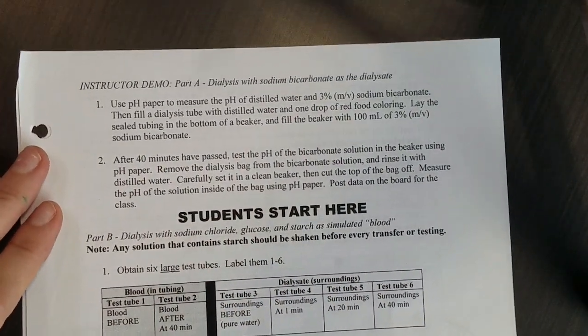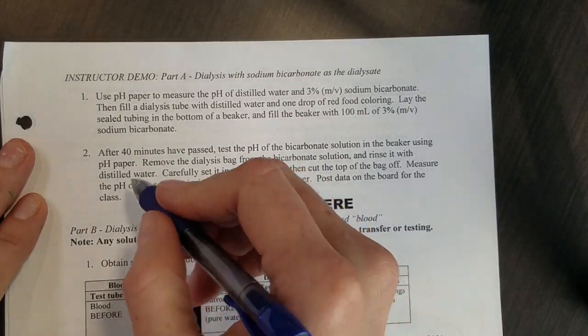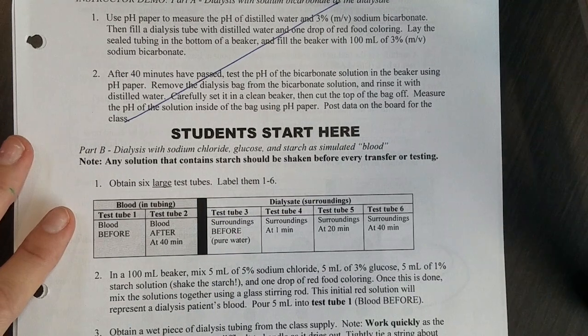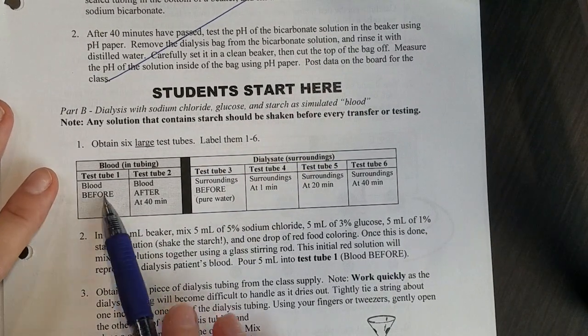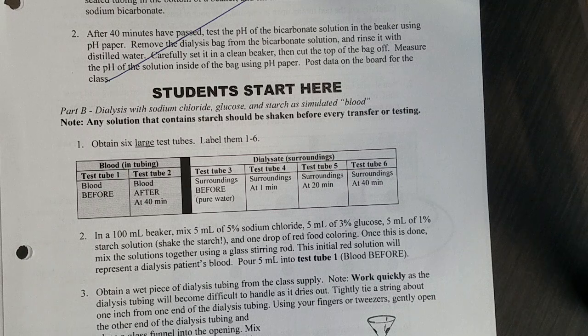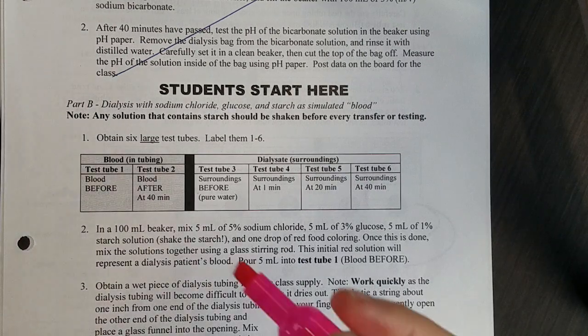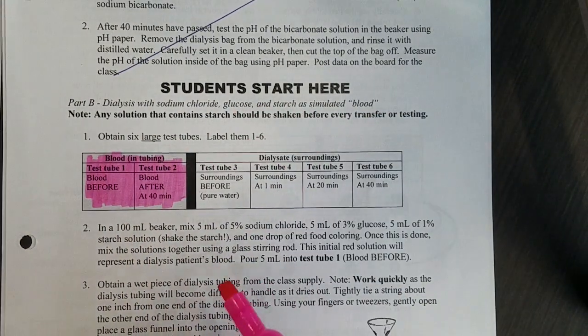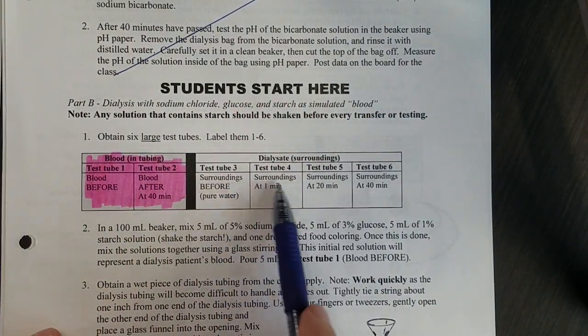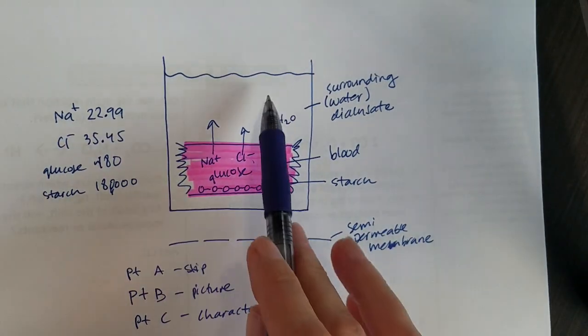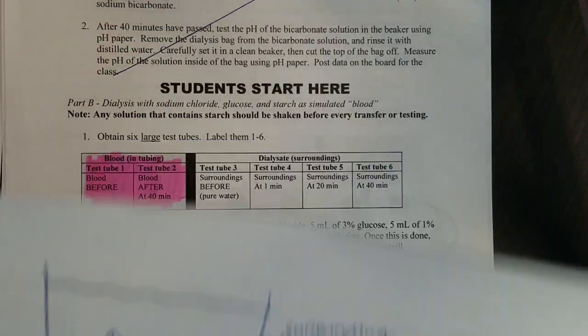We're going to skip part A today. You will see in the videos that there are six test tubes throughout this. Two of the test tubes will be used to study the blood before and after. Then the surroundings will be that surrounding piece, so we'll see what actually moves out of the blood and into those surroundings.